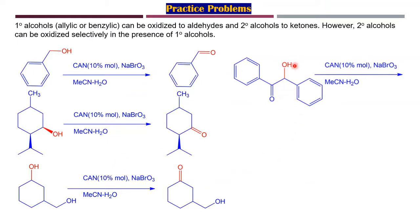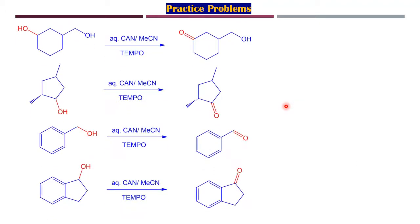Hydroxybenzoin treated with CAN in the presence of sodium bromate gives benzil. In further examples using TEMPO as the co-oxidant along with CAN: secondary alcohols are oxidized selectively to ketones, benzyl alcohol is oxidized to benzaldehyde, and secondary alcohols are again oxidized to ketones.